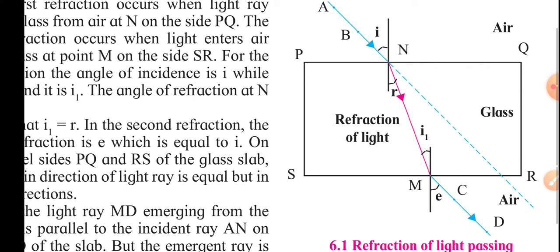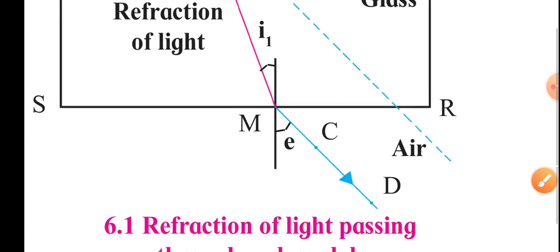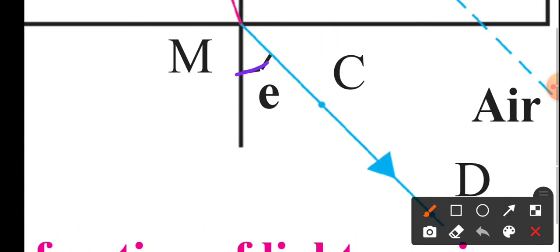We have already discussed the angle of incidence, angle of refraction, and the normal. One more term is 'E' — the angle of emergence, also called the angle of emergent ray. This refers to the light which entered the glass from air and then comes back out from glass to air — emerging out of the glass — which is why this angle is called the angle of emergence.